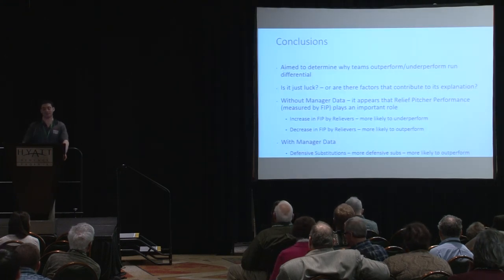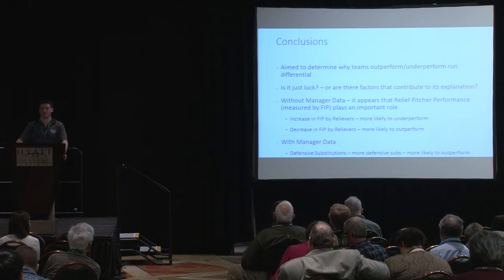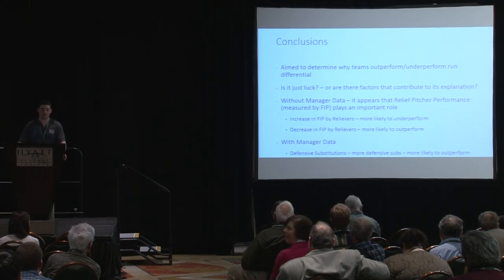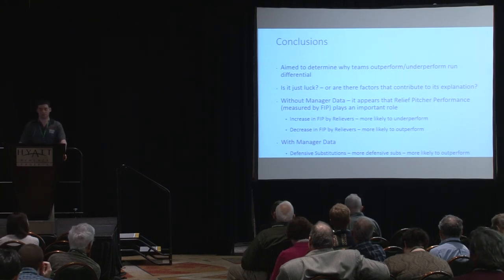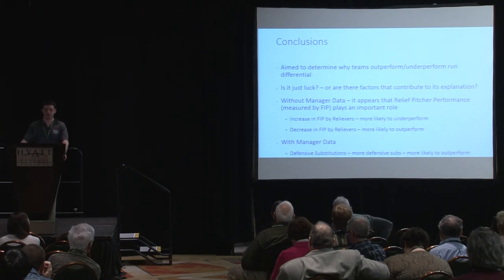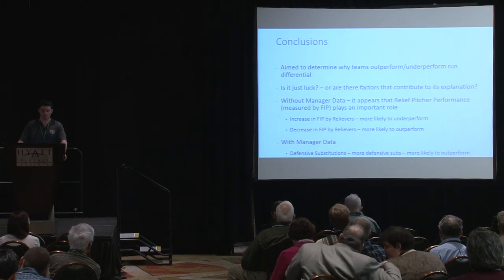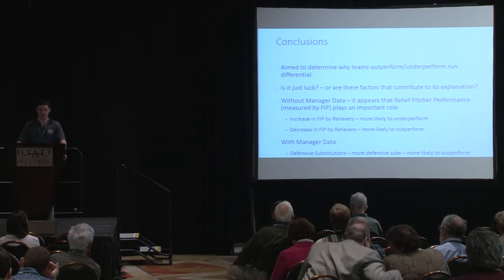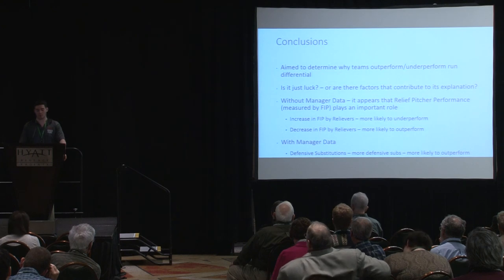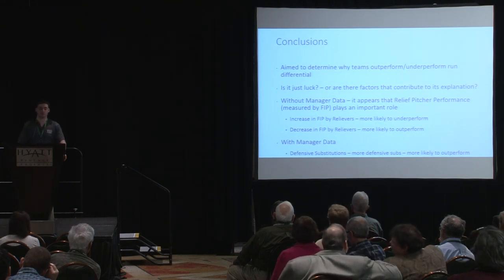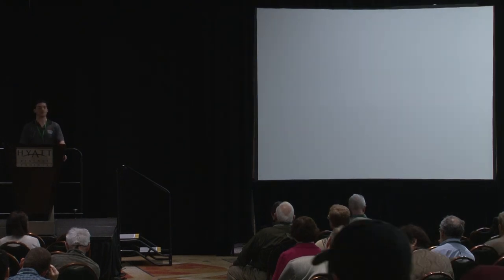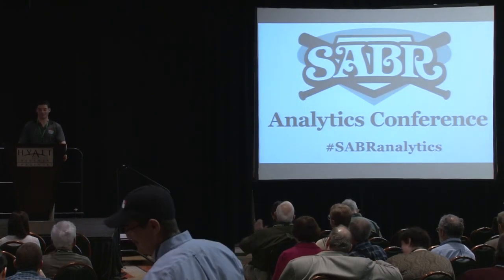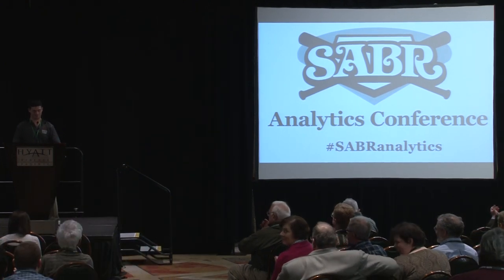In conclusion, we aimed to determine why teams outperform and underperform their run differential — is it just luck or are there factors that contribute to its explanation? Without manager data, it appears that relief pitcher performance measured by FIP plays an important role: an increase in FIP by relievers makes a team more likely to underperform, and a decrease makes them more likely to outperform their run differential. With manager data, more defensive substitutions correlates with outperforming, and more pitch outs thrown correlates with underperforming expected run differential. Thank you, and I'll be around if you have any questions or want to see any of the slides that were lost.